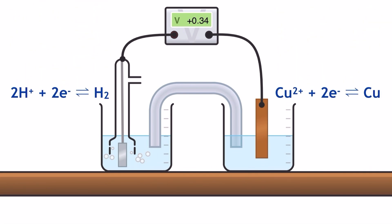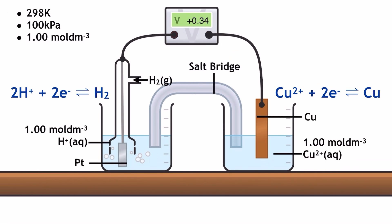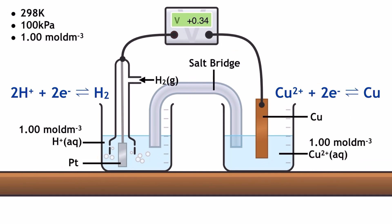This is the apparatus necessary to record the standard electrode potential of the copper half cell. Here we have the standard hydrogen electrode on the left and the copper half cell on the right. The copper half cell represents both sides of its half equation equilibrium by having a copper solid metal electrode placed in a solution of copper(II) ions. The voltmeter reports a value of positive 0.34 volts, and this is assigned as the standard electrode potential of the copper half cell redox system.